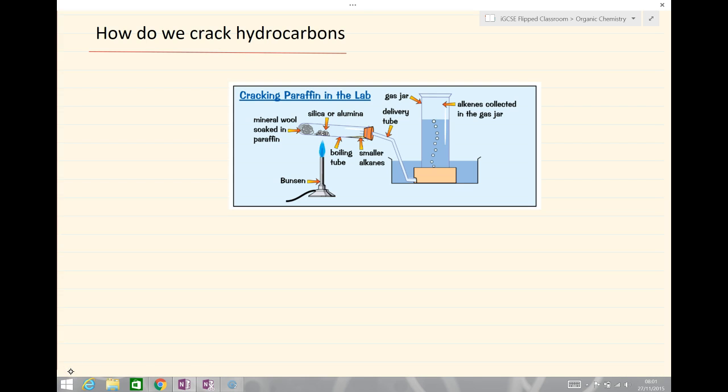So how do we crack hydrocarbons? Just be aware that if you are an A level student there are two types of cracking. Here in GCSE we're just looking at one type of cracking. To crack, what we have is our paraffin, or in this case our paraffin is our long chain hydrocarbon. We heat that to 600 to 700 degrees Celsius over an alumina or aluminium oxide catalyst.